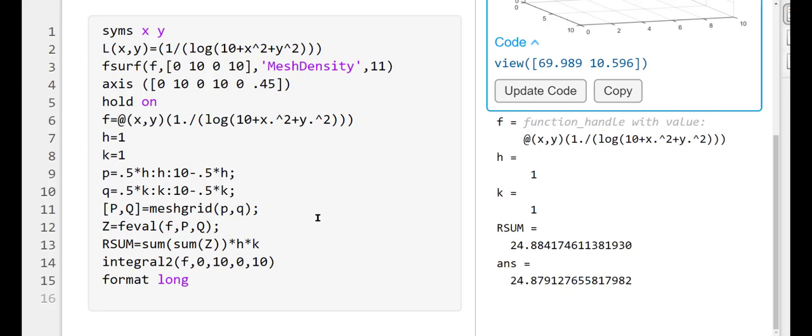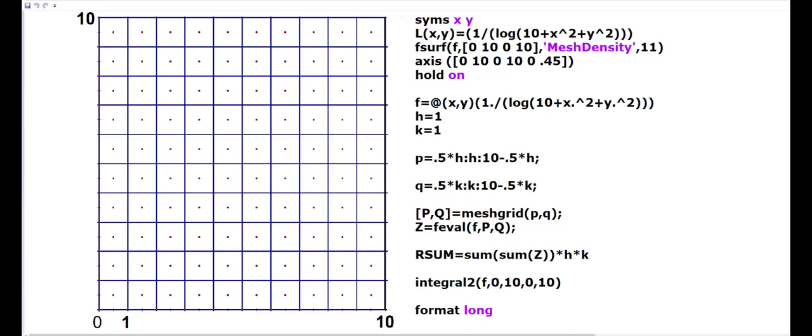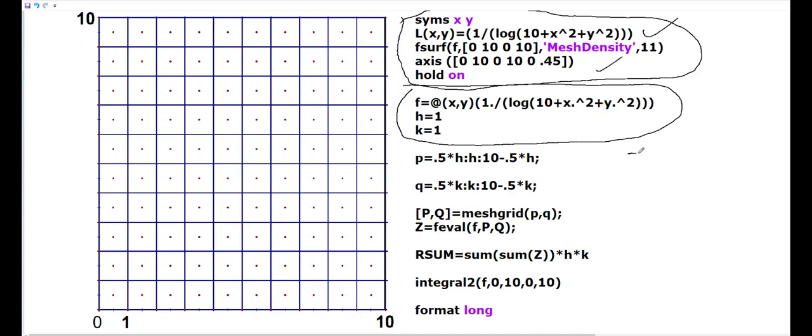Let's quickly note how we wrote these. Here we have the function written symbolically, which I used for the graph. This is the function handle we're using for approximating the Riemann sums. This portion deals with starting at 0.5 and then going in the interval in steps of 1 each, as denoted here, because we're taking the value of h as 1.